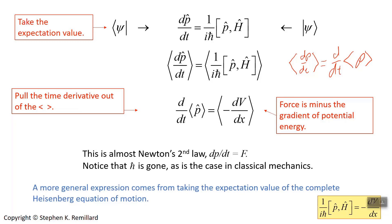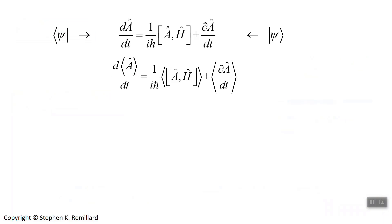Now I want a more general expression by going back to the Heisenberg equation of motion and putting the bra and ket around it. With a general operator A, you get a more general statement of Ehrenfest theorem. That's not the typical form — it's normally stated with momentum. When published, it's also referred to in this form as Heisenberg's equation of motion with expectation values.